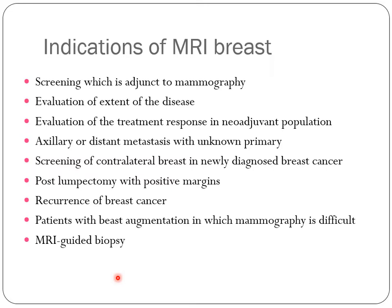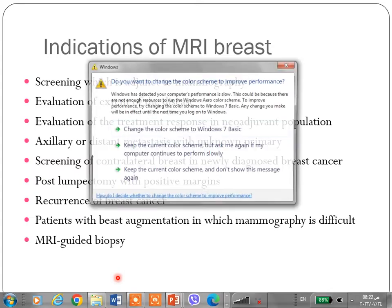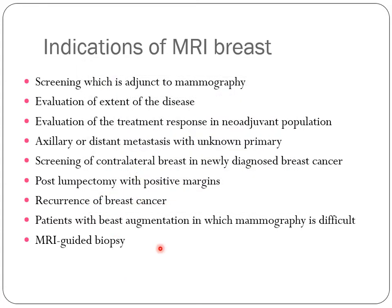It's important to know the indications of breast MRI because the indication determines the protocol used. There are two types of protocol: the abbreviated protocol and the multi-parametric breast MRI protocol. The abbreviated protocol is used for screening and includes T1-weighted acquisitions pre- and post-contrast. The multi-parametric protocol includes T2-weighted, DWI with ADC, and T1-weighted pre- and post-contrast with ultrafast series to evaluate dynamic contrast kinetics within the lesion.